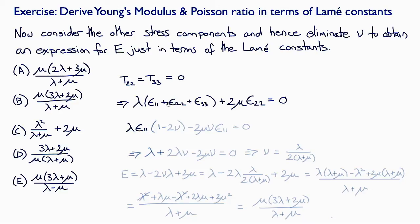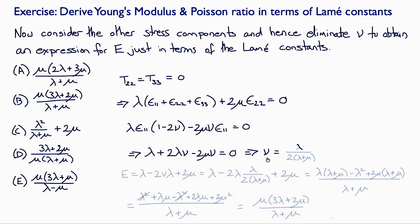Now, substituting in for epsilon 22 and epsilon 33 again using the Poisson's ratio, we get that lambda times epsilon 11 times (1 minus 2 nu) minus 2 mu times epsilon 11 equals 0. Cancelling epsilon 11, we get lambda plus 2 lambda nu minus 2 mu nu equals 0, which rearranges to give nu equals lambda over 2 times (lambda plus mu).